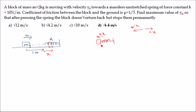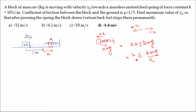The block does not return means: when the block compresses the spring by x, the spring restoring force kx acts in the minus-x direction, and frictional force acts in the plus-x direction with value μmg. For the block not to return, kx must be less than or equal to μmg. So x ≤ μmg/k. For the limiting case (maximum v₀), we take x = μmg/k.